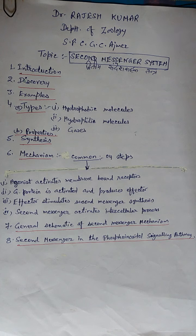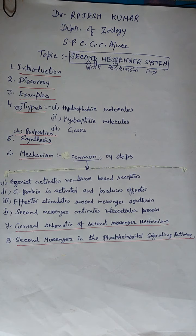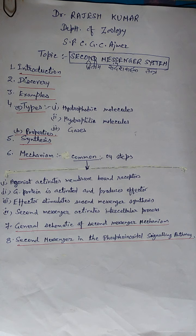First point is introduction. Second messengers are intracellular signalling molecules released by the cell in response to exposure to extracellular signaling molecules — that is the first messenger. Second messengers trigger physiological changes at the cellular level such as proliferation, differentiation, migration, survival, apoptosis, and depolarization. They are one of the triggers of intracellular signal transduction cascades.